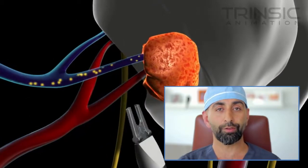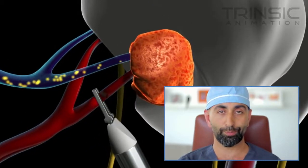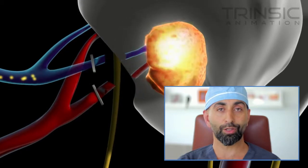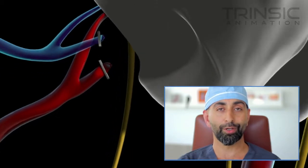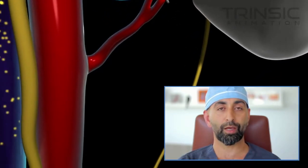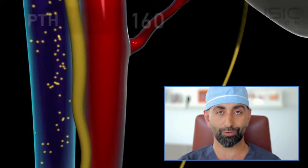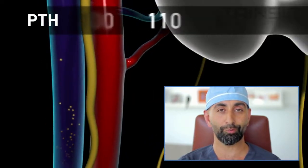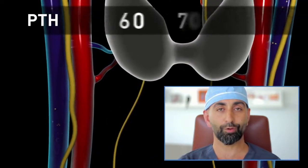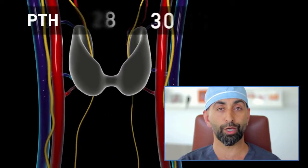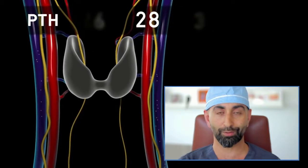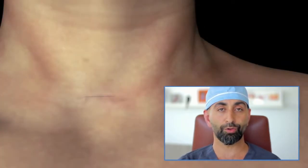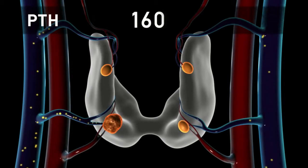After protecting the nerve, we find the enlarged parathyroid, identify the blood vessels feeding it, and tie or clip them. We then remove the enlarged parathyroid. Ten minutes later, we get a sample of PTH. Because the half-life of PTH is less than 5 minutes, after 10 minutes the PTH level should go down significantly, confirming the surgery has been successful.